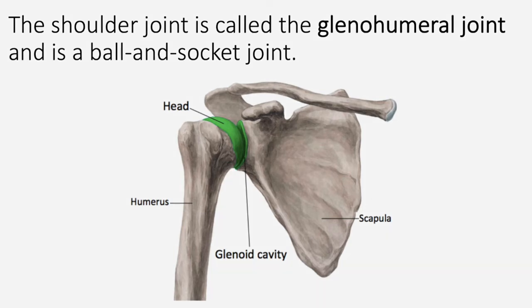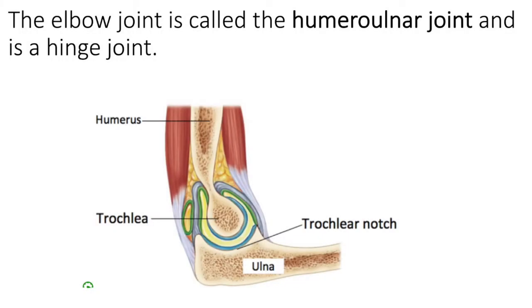The elbow joint is called the humero-ulnar joint. It is a hinge joint and can exclusively do flexion and extension. The important components are the distal epiphysis of the humerus — specifically the trochlea — and the proximal epiphysis of the ulna, which has a notch that moves around the trochlea, forming that hinge joint.